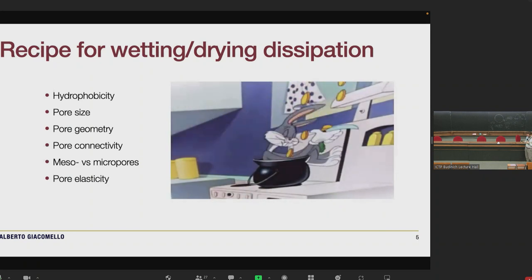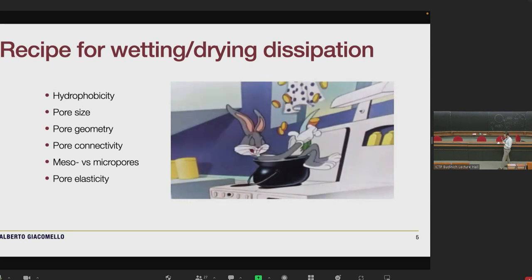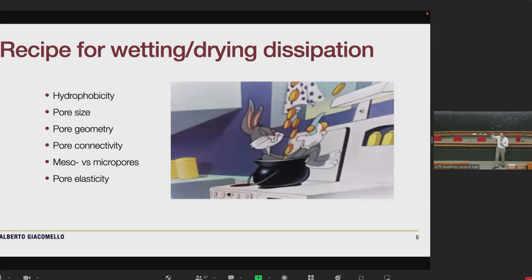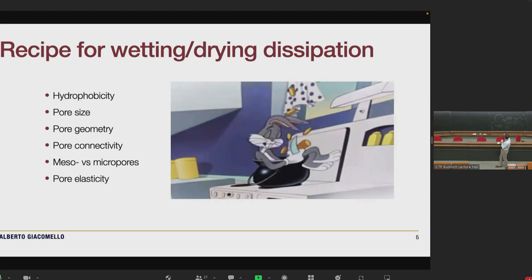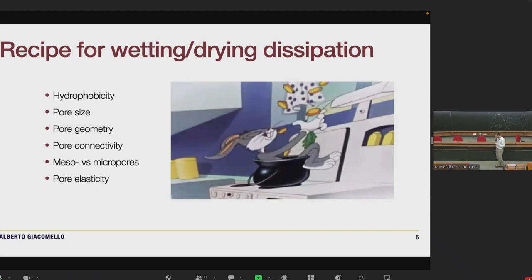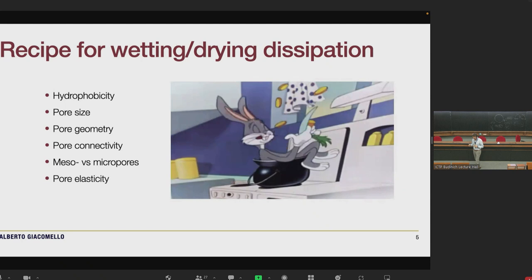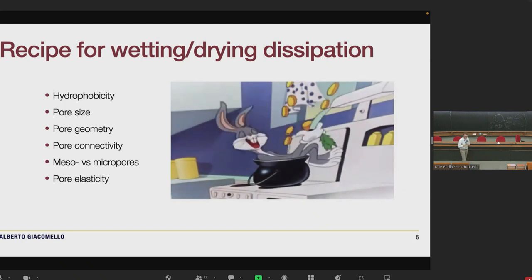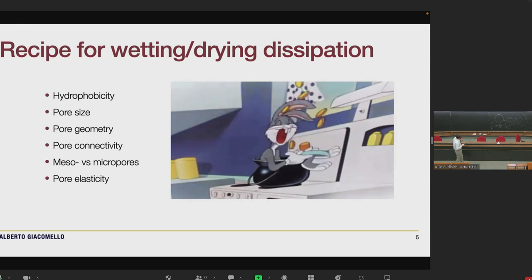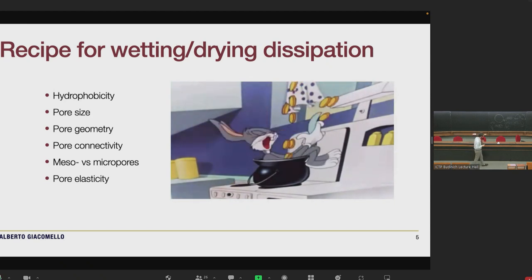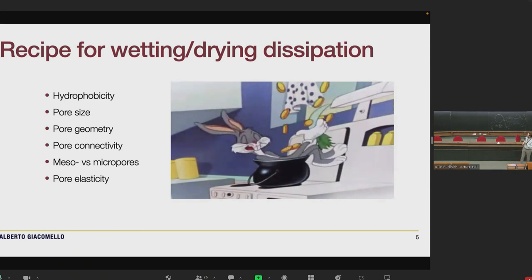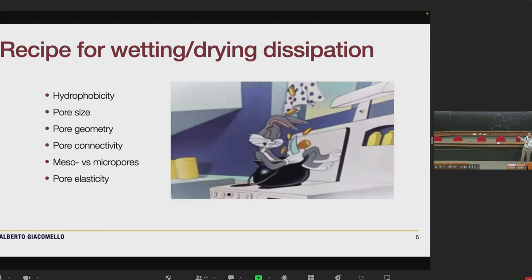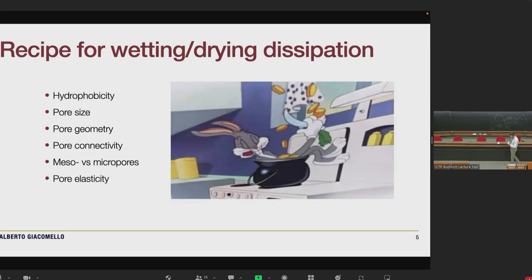How do we control dissipation from wetting and drying hysteresis, which in the end boils down to how you control boiling in confinement? We have different ingredients we can play with. On the menu we have: you can change the hydrophobicity, the size of the pores, the geometry, the topology, for instance how much they are connected, different types of pores molecularly defined or mesopores, and pore elasticity.